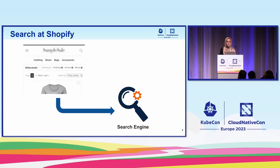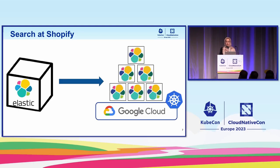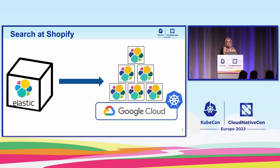Search is a fundamental part of any e-commerce platform that allows buyers to search and filter for the products they're looking for. It also allows merchants to fulfill the orders they have received. When you search on any online store, your request goes to a search engine backed by a secondary data store — different from traditional databases — which we call the search infrastructure. At Shopify, we use Elasticsearch running on top of Kubernetes on Google Cloud Platform, deployed and maintained using a custom Kubernetes controller we have built.